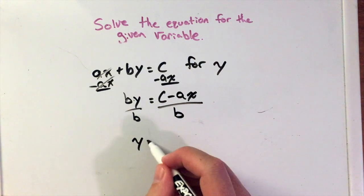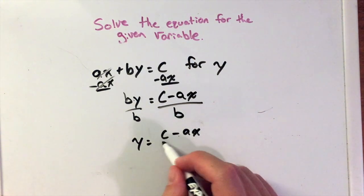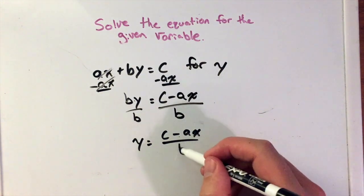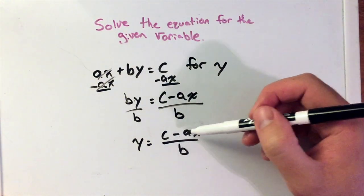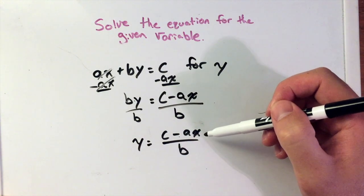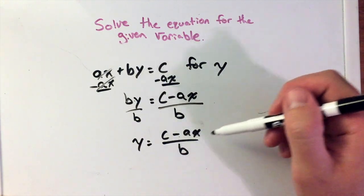Now we're left with y equals c minus ax over b. Usually this is where I stop. You could put the b underneath both parts here, but since we don't know what c and a are or even x for that matter, we won't be able to cancel anything out.